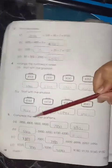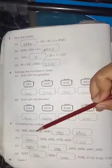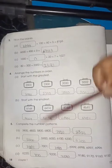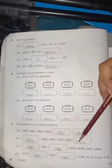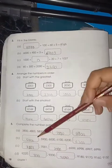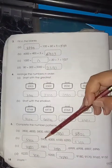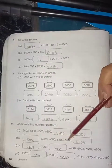Arrange the numbers in order starting with the greatest, starting with the smallest. Complete the number pattern. 3800, 4800, 5800, 6800, 7800, and 8800. Next: 300, 200 backward - 800, 900, 1000, 100, 200, 300.